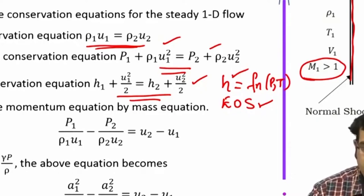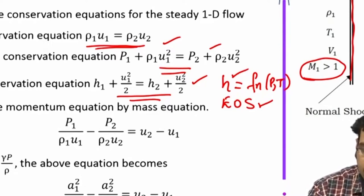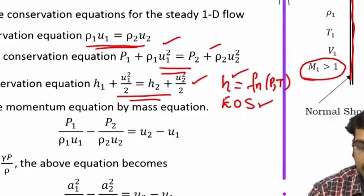For a normal shock — which is normal to the direction of flow — the downstream Mach number is always subsonic and the upstream Mach number is supersonic. Starting the derivation: from the continuity equation ρ₁u₁ = ρ₂u₂, we directly get ρ₂/ρ₁ = u₁/u₂. We keep this in mind and move to the second equation.